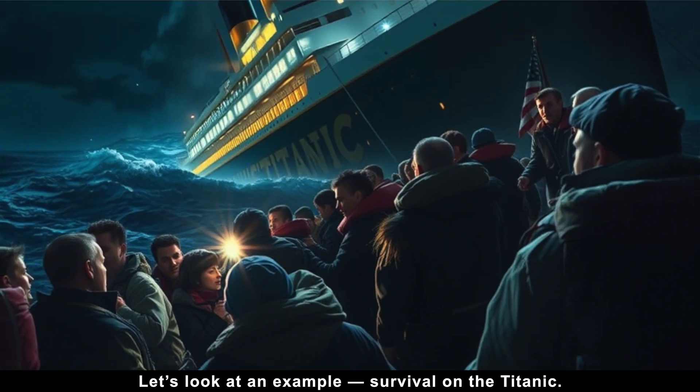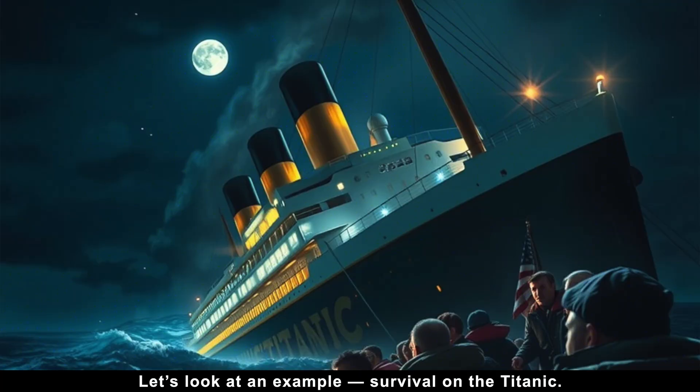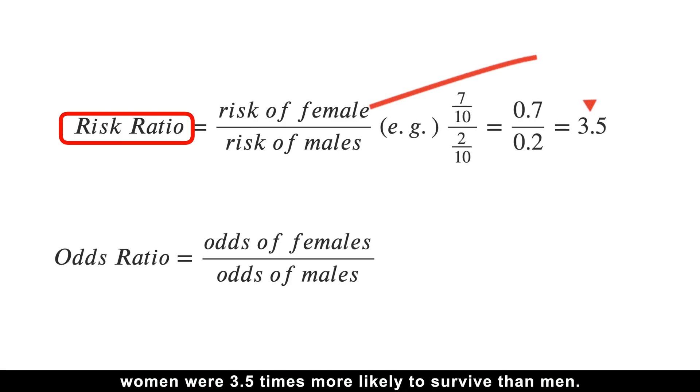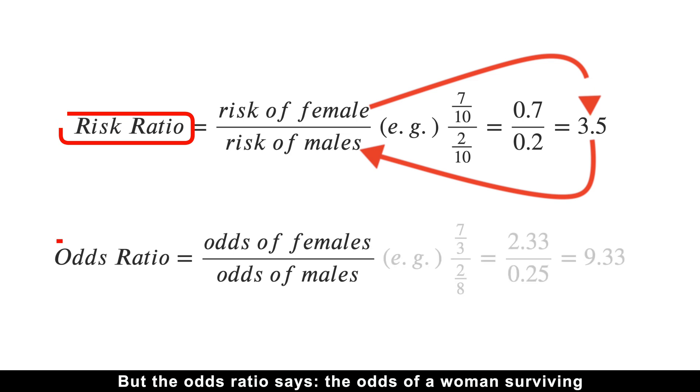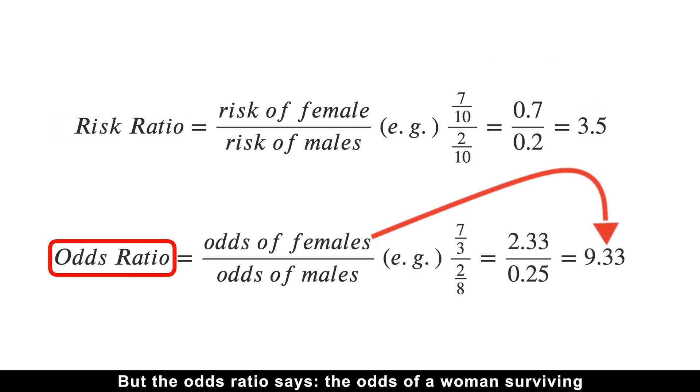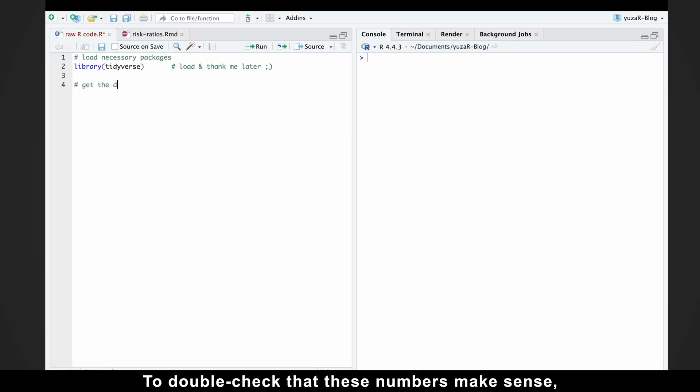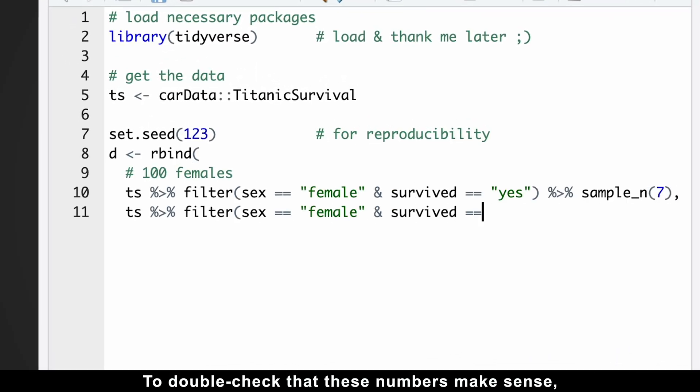Let's look at an example, survival on the Titanic. The risk ratio says women were 3.5 times more likely to survive than men. But the odds ratio says the odds of a woman surviving were 9.33 times higher than the odds of a man surviving. Big difference, right?